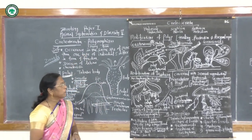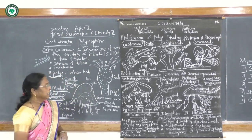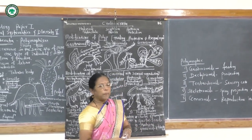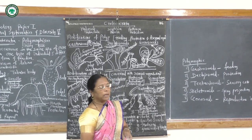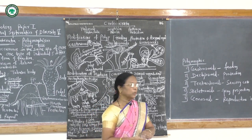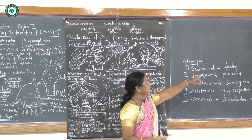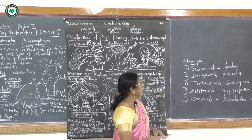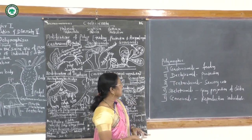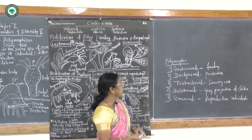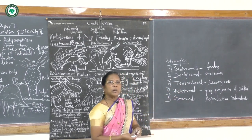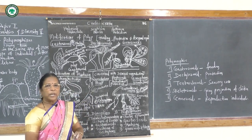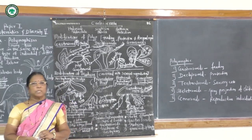Finally, the functions or significance of polymorphism: there is division of labor, with different duties performed by different individuals. Gastrozoids perform the function of nutrition. Dactylozoids perform protection. Tentaculozoids have sensory cells for protection. Skeletozoids have spiny projections or chitin also for protection. And gonozoids perform the duty of reproduction — they are the reproductive individuals. These are the functions of polymorphism.